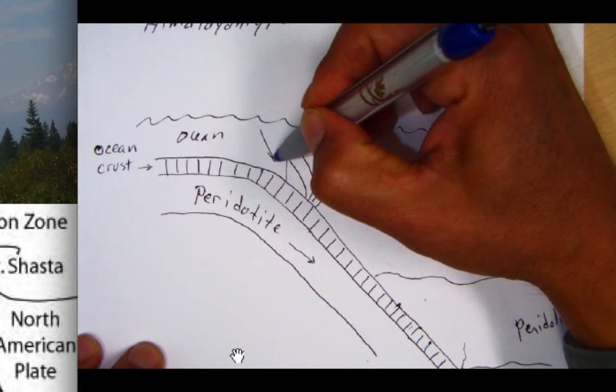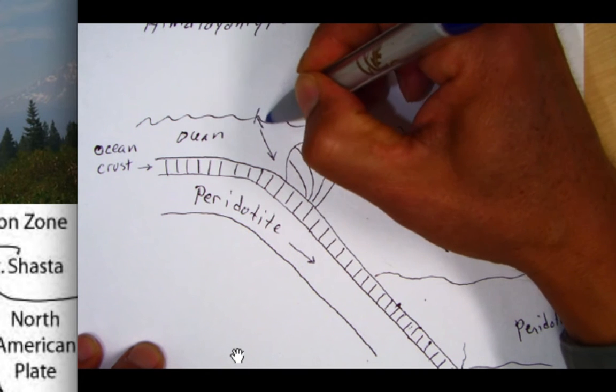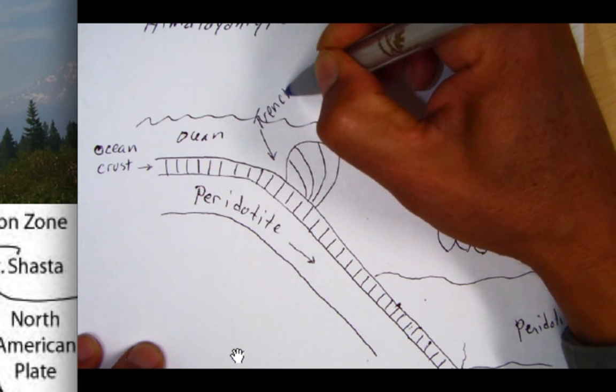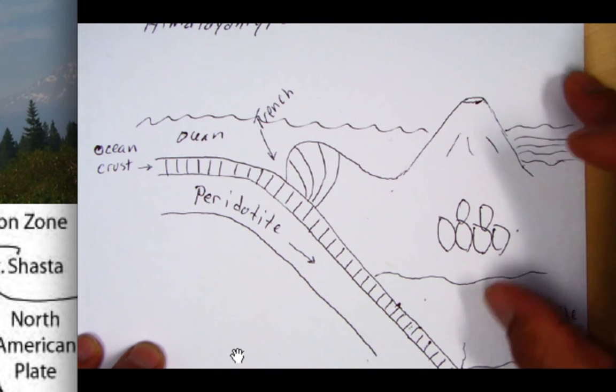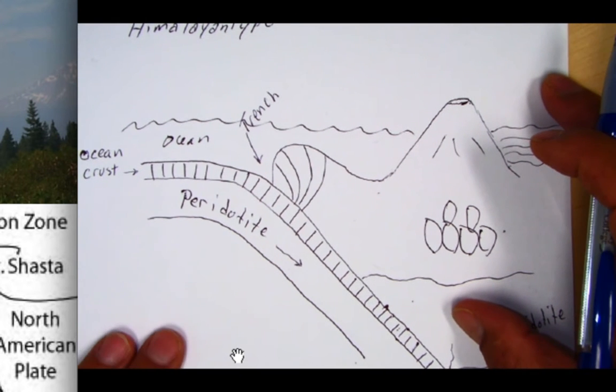This thing here is called the trench. The trench is this deep furrow that'll parallel the chain of volcanoes, like we saw the Peru Chile Trench and the Middle America Trench, or Cascadia Trench here in Northern California.